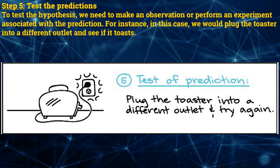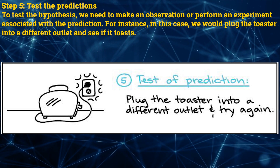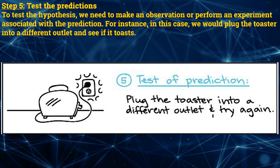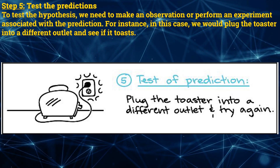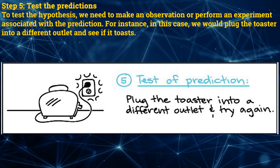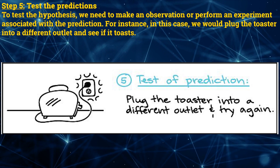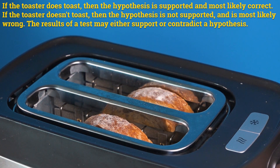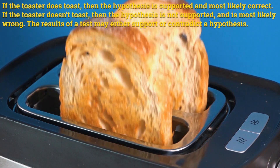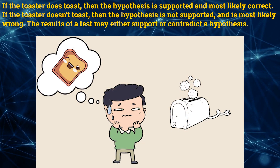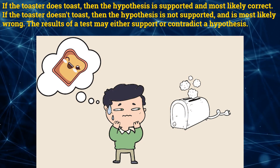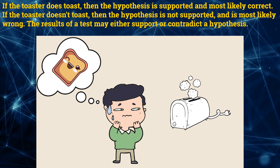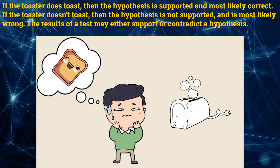Step 5: Test the predictions. To test the hypothesis, we need to make an observation or perform an experiment associated with the prediction. In this case, we will plug the toaster into a different outlet and see if it toasts. If the toaster does toast, then the hypothesis is supported and most likely correct. If the toaster does not toast, then the hypothesis is not supported and is most likely wrong. The results of a test may either support or contradict the hypothesis.